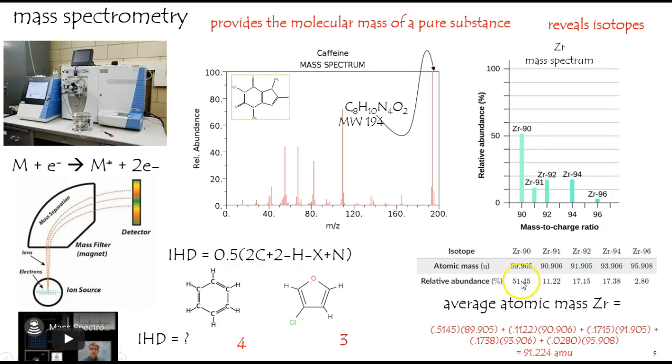So if we do a weighted average, 51% for example being 90, express it as a decimal, and 11.22% times 90.9, and just add them all up. Once you get 100% of your sample, you get an average atomic mass of 91.22,